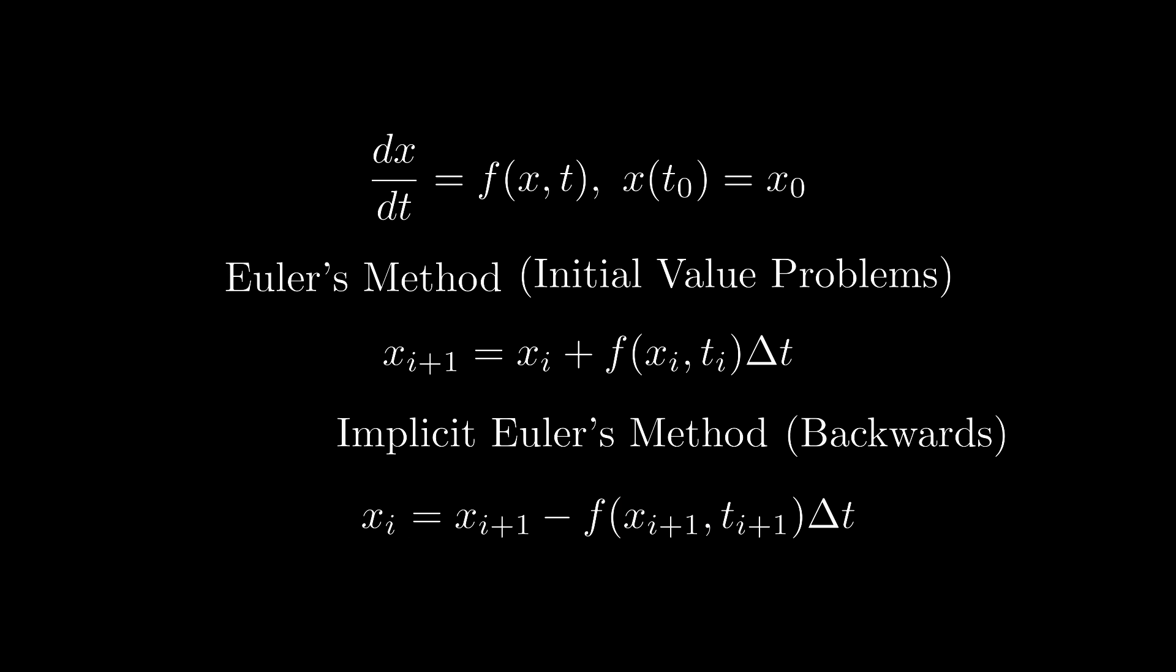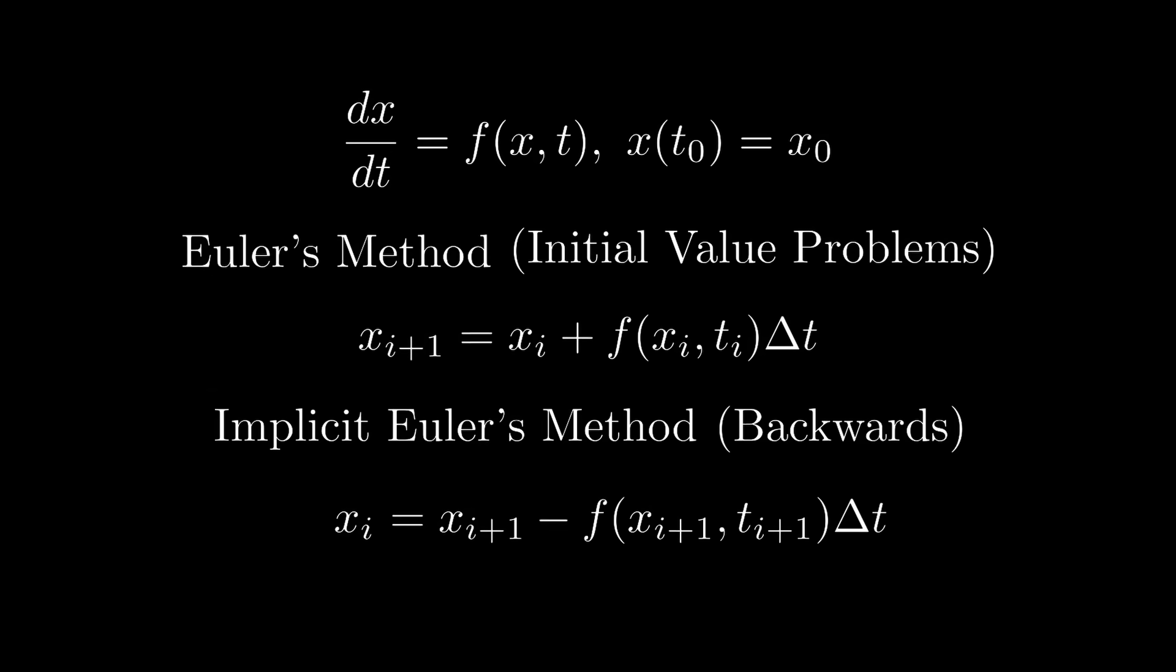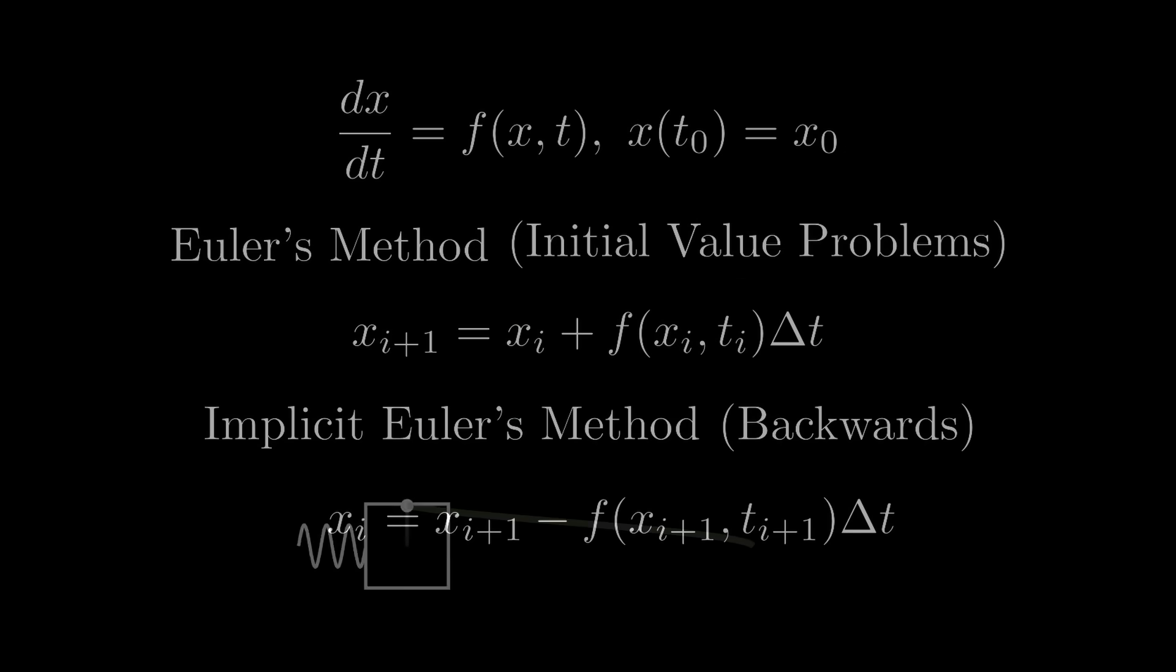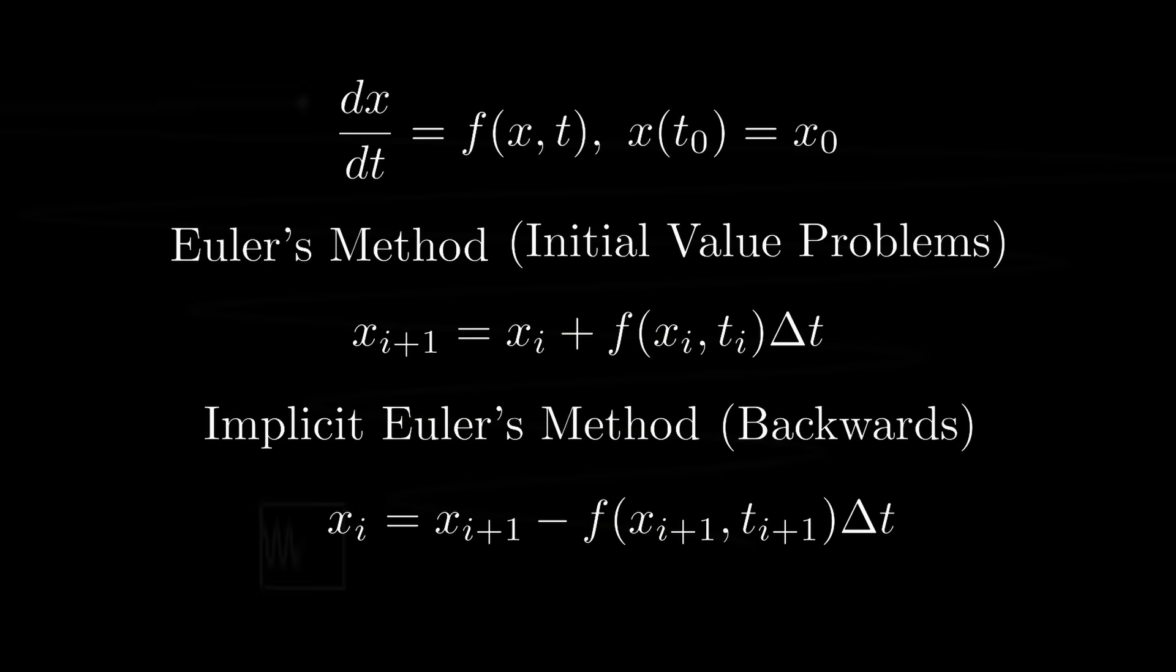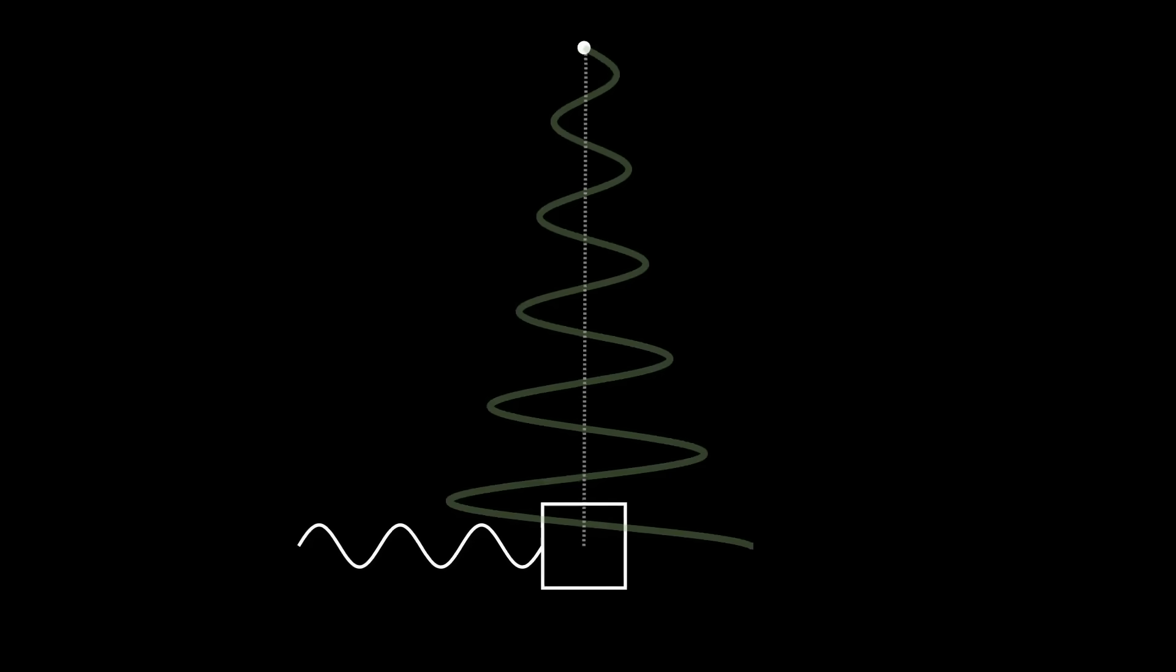So in a sense, the implicit method is just a backward Euler's method. Thinking about it this way, it makes perfect sense why we have a damping. Euler's method blew up as time increased; since the implicit method is the same thing in reverse, the amplitude will decrease with time. So unfortunately, this approximation method isn't going to cut it for our spring simulation.